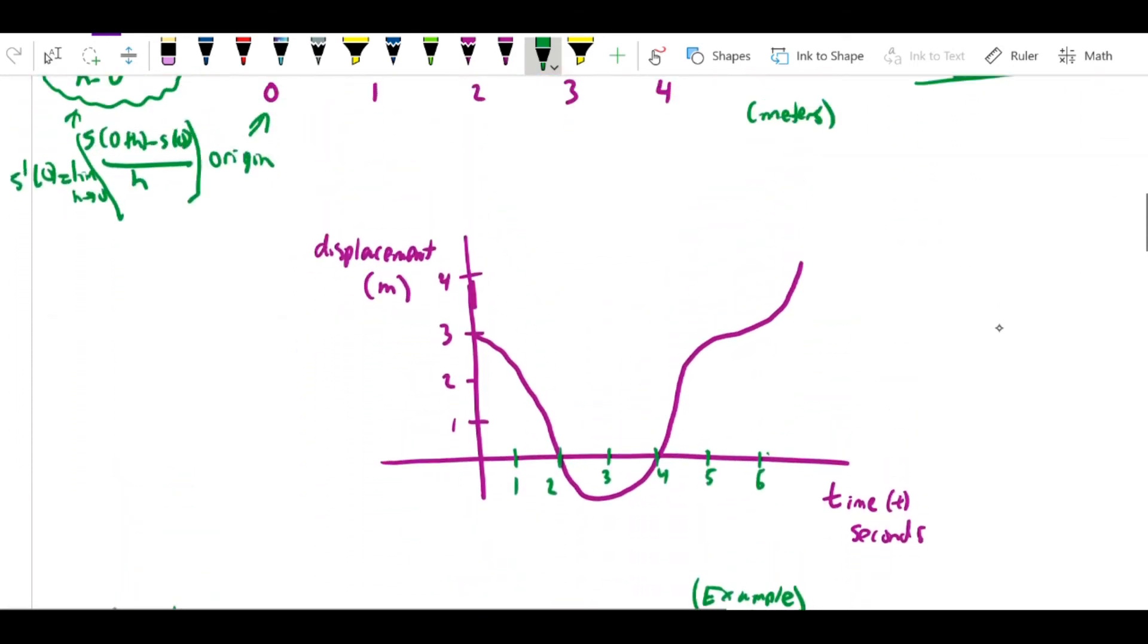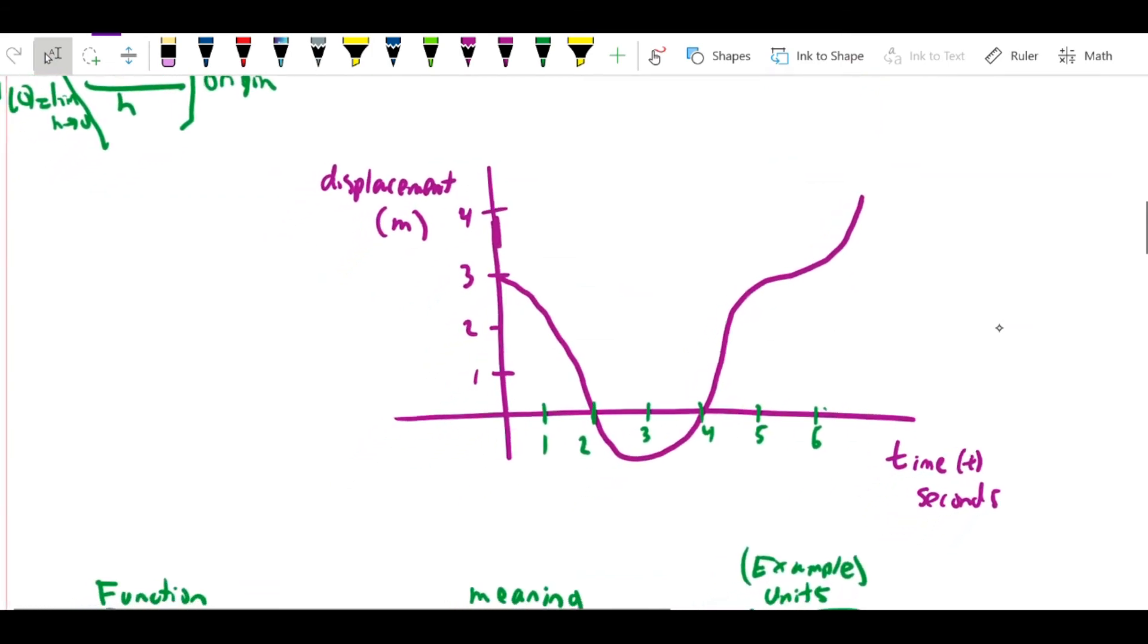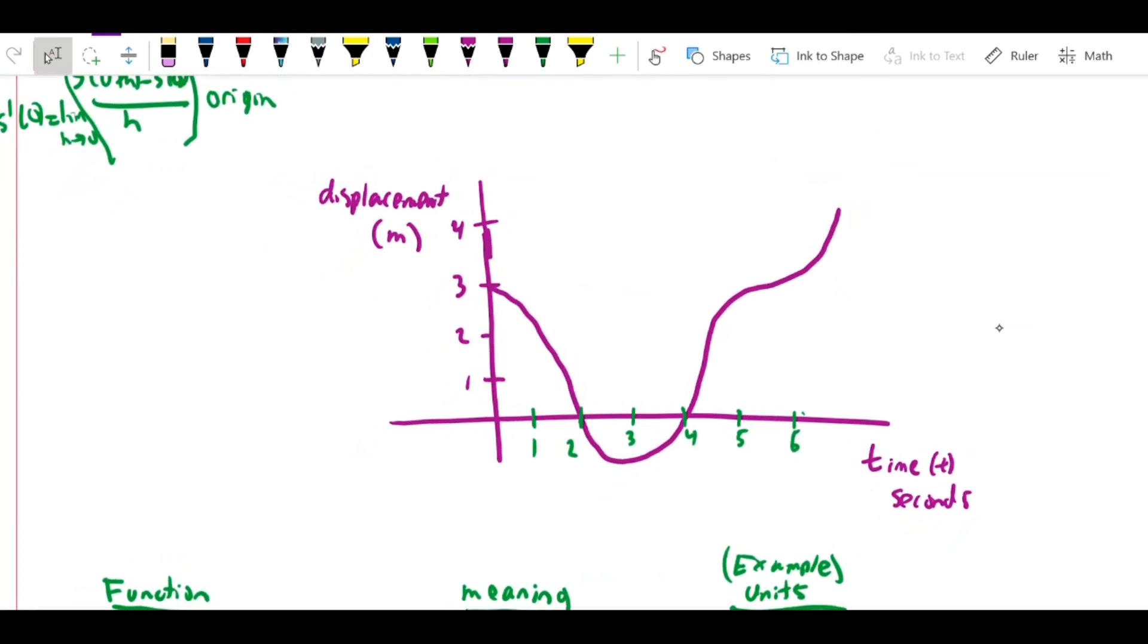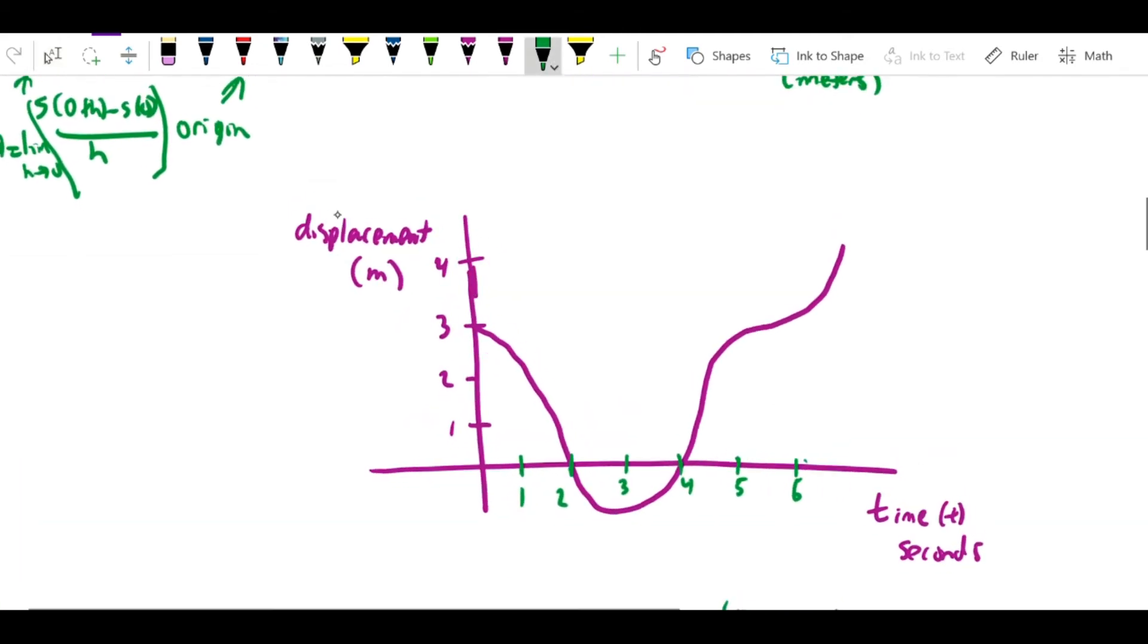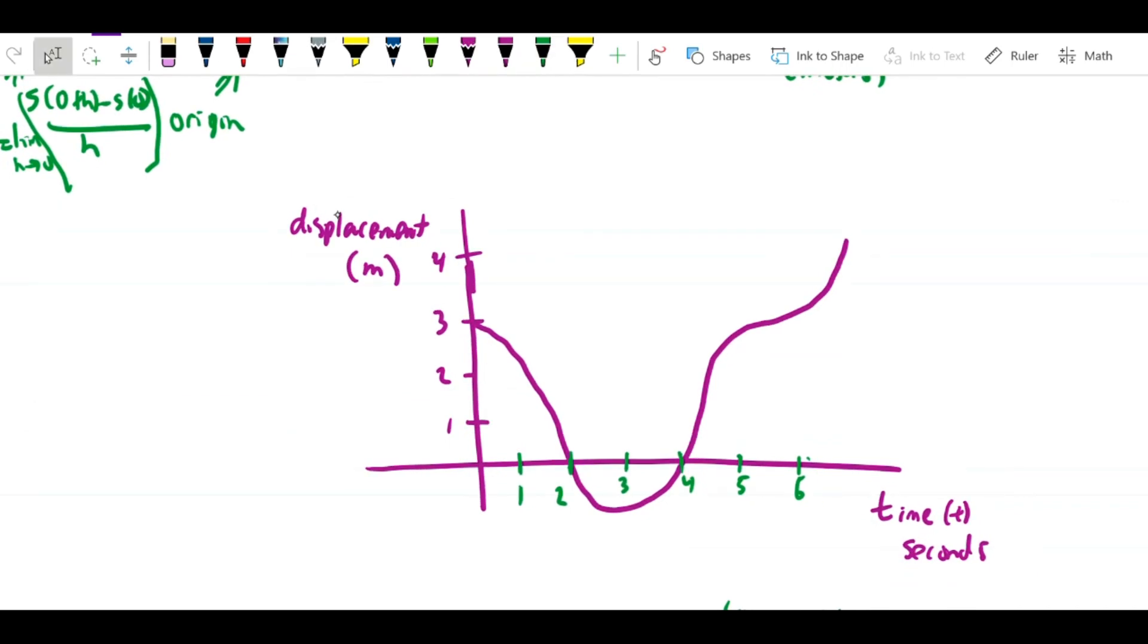It might be easier to see graphically if I were to map displacement this way. I didn't want to do it this way because we're imagining the object moving horizontally and I have to introduce a vertical dimension. But here I'm simply showing what displacement as a function of time would look like.